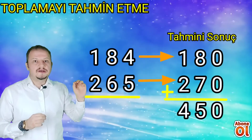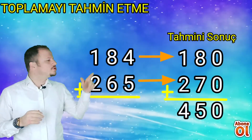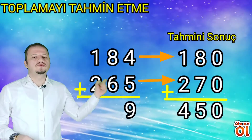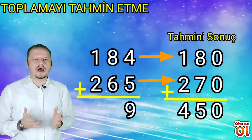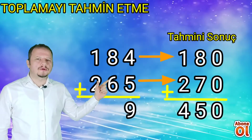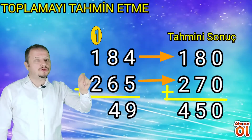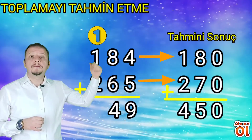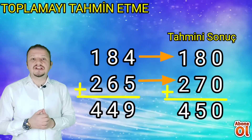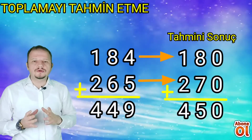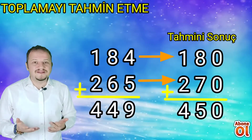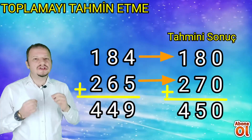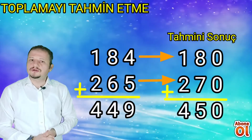Rakamları yuvarlamadan toplayarak gerçek sonucu bulalım. 4 birlik, 5 birlik daha 9 birlik eder. 8 10'luk, 6 10'luk daha 14 10'luk yapar; 14'ün 4'ünü yazıyoruz, elde var bir 100'lük. Yüzler basamağında iki 100'lük, bir 100'lük daha 3, bir de elde vardı: 400'lük eder. İşlemimizin gerçek sonucu 449'dur. Bakın ne kadar yaklaştık! 450 tahmini sonucumuzdu, işlemimizin gerçek sonucu 449'dur.